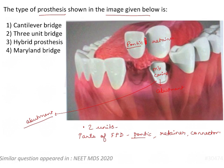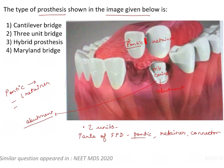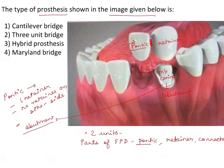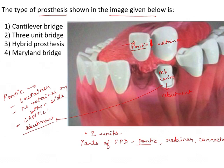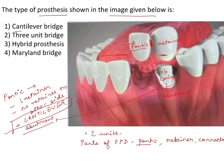This is the connector for this bridge. Now, this pontic is not supported by a retainer on one side — it is hanging in mid-air from the other side. A pontic which has only one retainer and no retainer on the other side is called a cantilever prosthesis. Cantilever means it is supported only on one side, not supported on the other side. Looking at the options: it is a cantilever bridge, a three-unit bridge, a hybrid prosthesis, or a Maryland bridge.